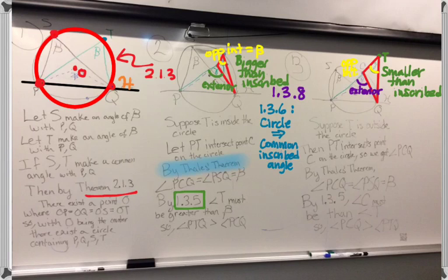And so, again, by 1.3.5, exterior angles are always bigger than opposite interior angles, and so beta is bigger than gamma in this case. So when our point is inside the circle, it makes a bigger than inscribed angle with P and Q. When our point is outside the circle, it makes a smaller than inscribed angle with P and Q. And that leaves the only case remaining that when our point is on the circle itself, it makes an equal to inscribed angle with P and Q by Thales' theorem.